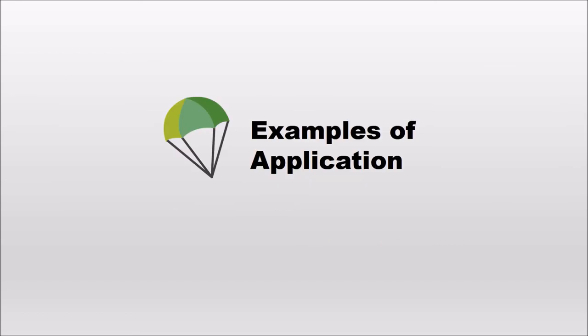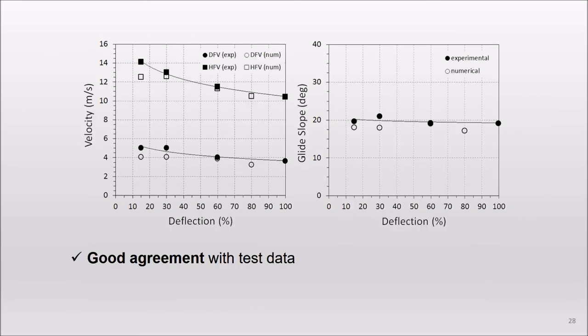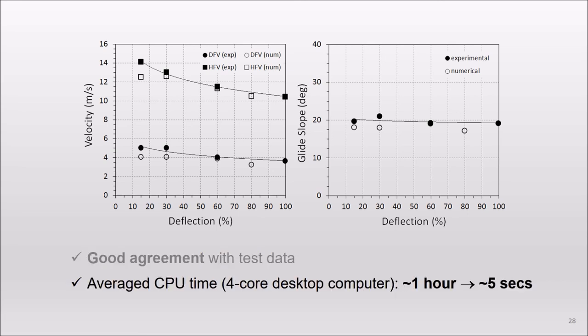We like to show some application examples and comparison of calculated and experimental data. Here we have a parachute-payload system with symmetric brakes. We can see the evolution of aerodynamic forces with the percent of tail deflection. This is the velocity and glide slope, and it is possible to see a very good agreement between calculated and experimental results. To give you an idea of the cost of this simulation, 5 seconds of physical time takes in ParaJuice about 1 hour running on a desktop computer. In this way, in a few hours, it is possible to have an estimate of the steady performance of the system.